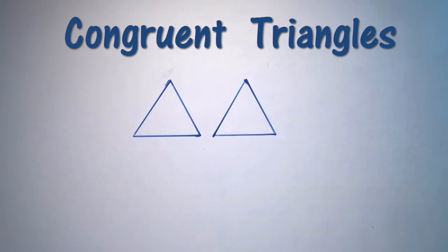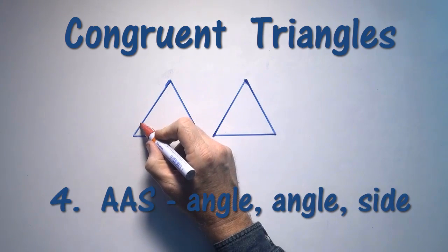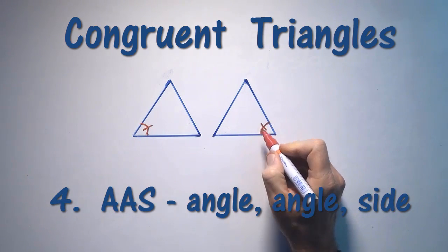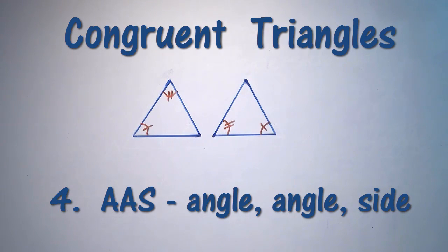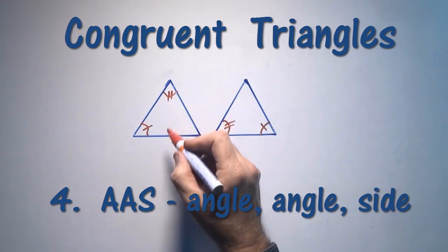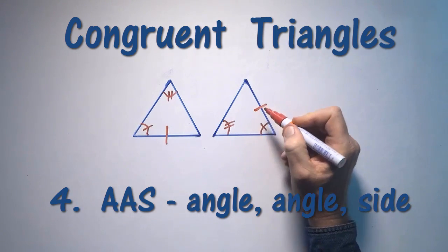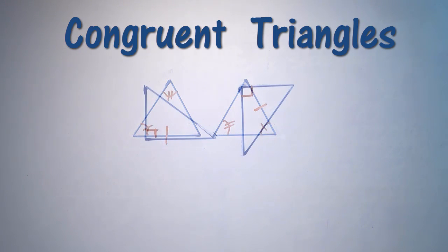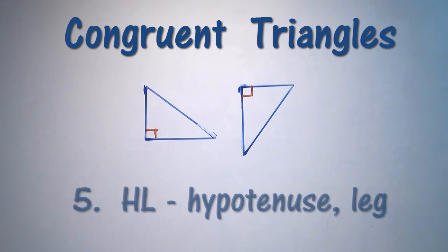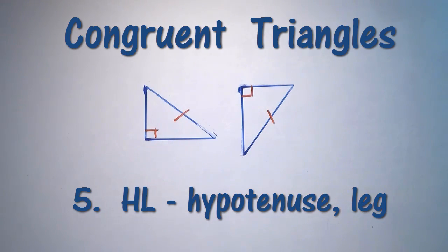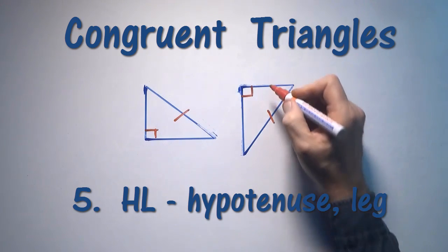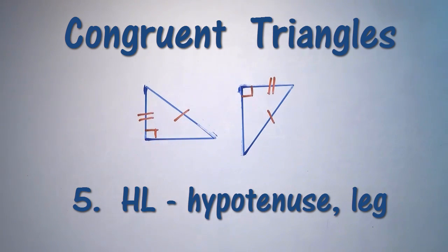The fourth type is called AAS. You have two equal angles and one equal side. The equal side must be opposite the same equal angle. The fifth type is called hypotenuse leg (HL). So if you have a right triangle, the hypotenuse of each triangle is the same, and one of the legs is the same. That completes the review of congruent triangles.